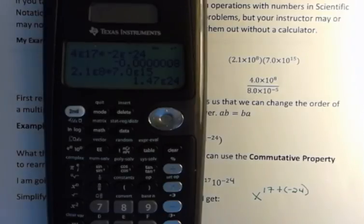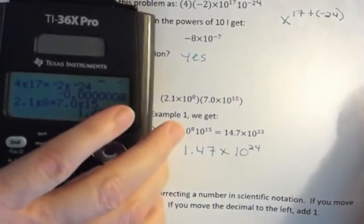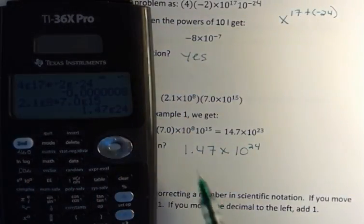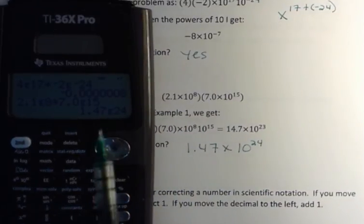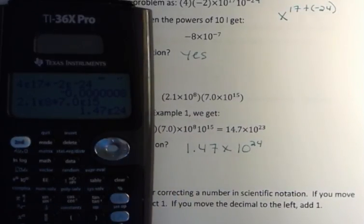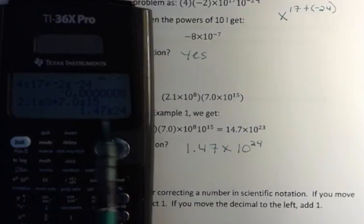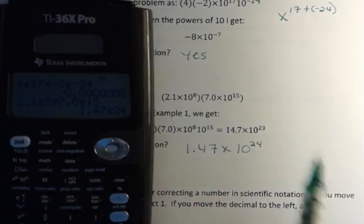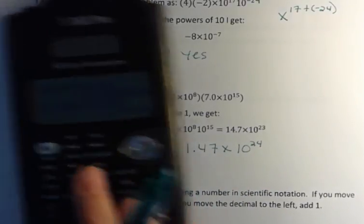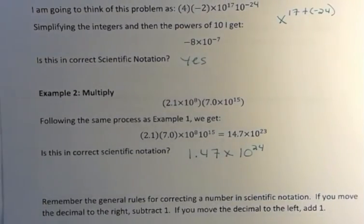When you see the E, that means, remember what our answer was, our answer was 1.47 times 10 to the 24th. So this is what the problem looks like on your calculator. So you have to be able to translate it into correct format, and if you put on the test this with E24, I'll know that's what your calculator said, but that's not the correct way to write scientific notation for us. Okay, have a fantastic day.